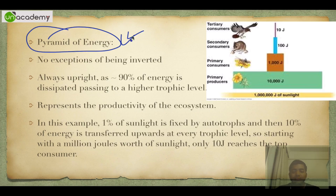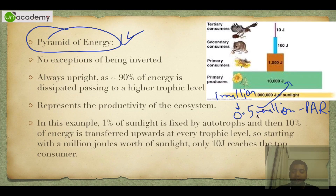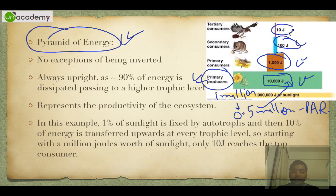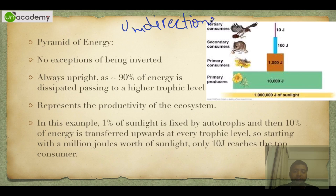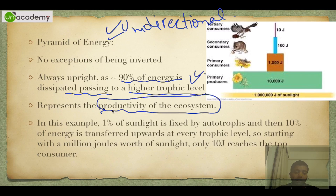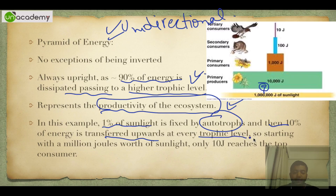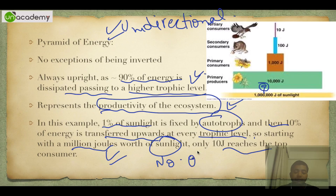The pyramid of energy has absolutely no exceptions. Assume 1 million units of sunlight — 0.5 million is photosynthetically active radiation (PAR). 2 percent of that is utilized, so 10,000 units are fixed by primary producers. Then 10 percent is transferred: 1,000 to primary consumers, 100 to secondary consumers, 10 to tertiary consumers. The pyramid is always upright because the flow of energy is always unidirectional. 90 percent of energy is dissipated at each trophic level. Starting with 1 million joules of sunlight, only 10 joules reaches the top consumer — this is also why trophic levels are limited to four or five maximum.